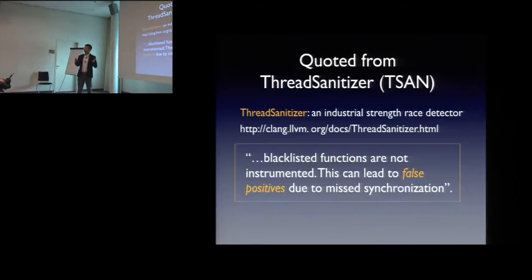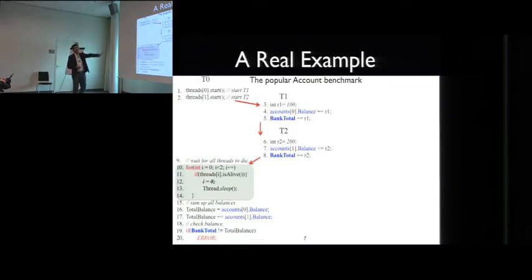Many of you, I believe, already know what thread sanitizer is, which is industrial quality race detector, which is used regularly in open source projects. For example, in Google Chrome browsers in testing, in detecting races in Firefox and so on. And this is quoted from the official documentation of TSan. The blacklist functions are not instrumented, and this can lead to false positives due to missed synchronization.